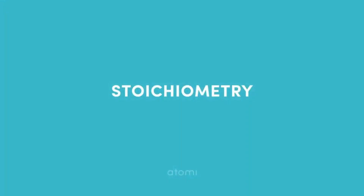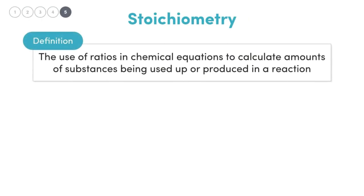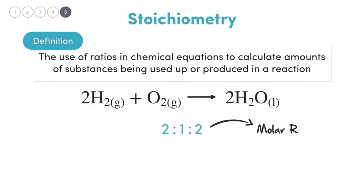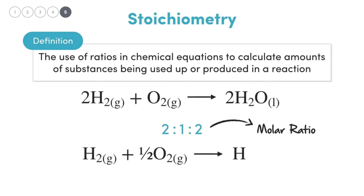Since we can determine the mole ratio from a chemical equation, we can use this to determine the amount of substance formed or used up — and this forms the basis of stoichiometry, which we use to determine the quantity of a reactant or product in a reaction. For the equation 2H₂ + O₂ → 2H₂O, the mole ratio is 2:1:2, meaning one mole of hydrogen combines with half a mole of oxygen to form one mole of water.